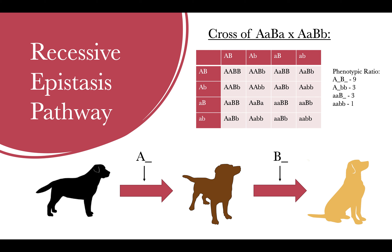Next, it would be easiest to count up all the squares with a dominant A locus but a recessive B locus, meaning there must be a big A but there can't be a big B. Counting these squares up, you should see that there will be three that will show the chocolate phenotype. Lastly, counting up the squares that have a dominant allele for both A and B loci, you will see that there is a total of nine that will reach the end of that pathway and show the yellow phenotype.